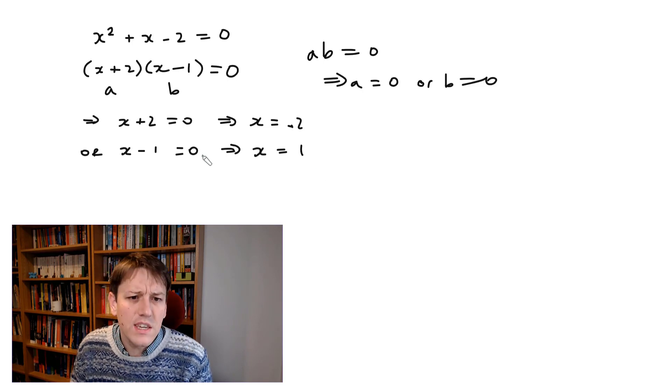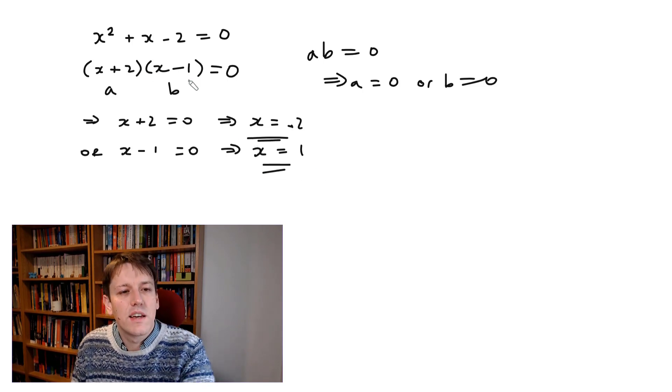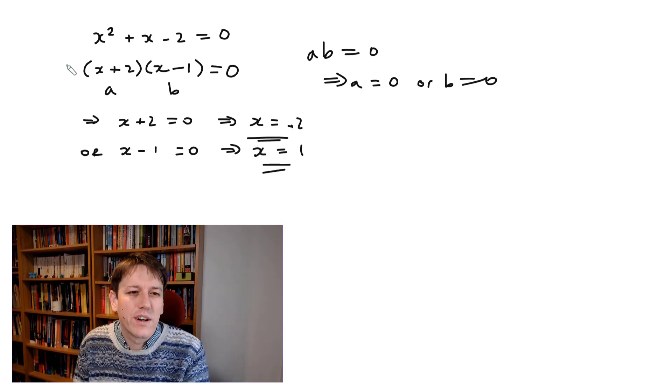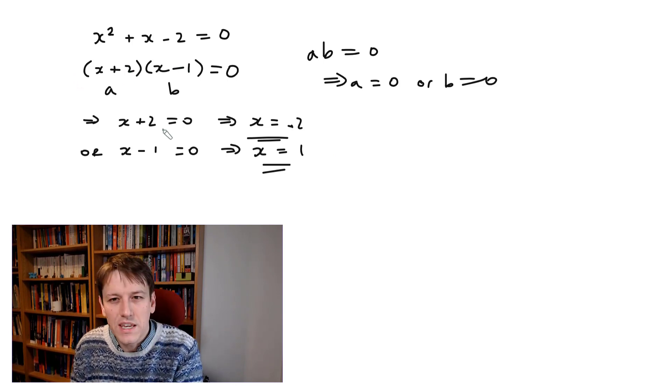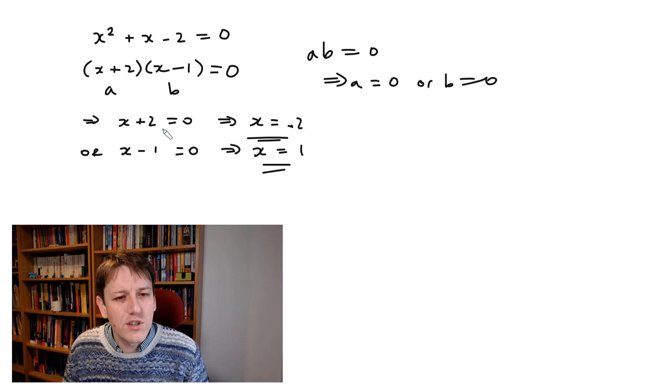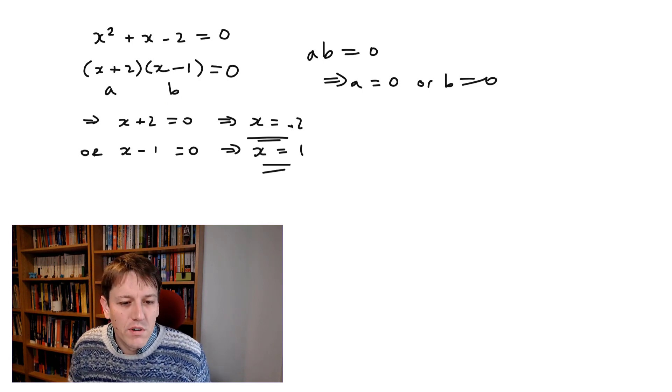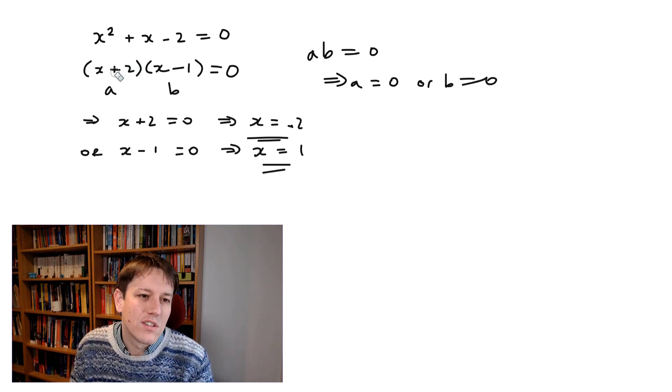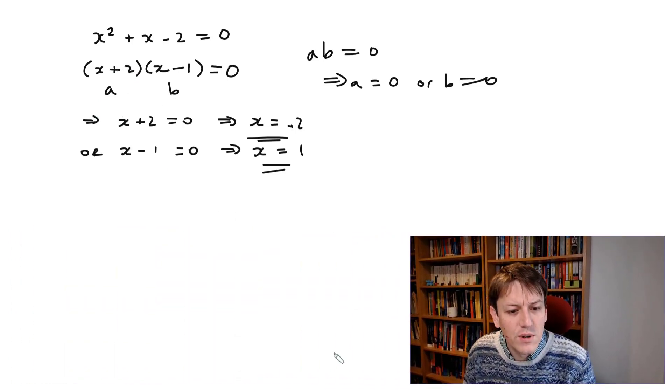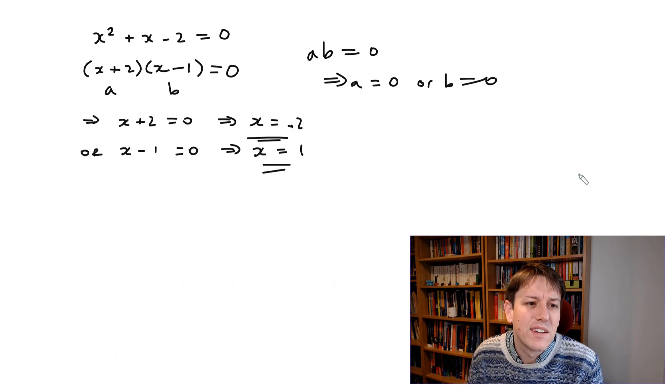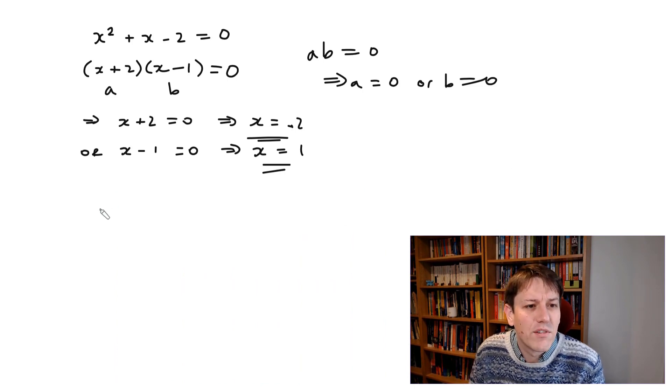You see, a lot of people look at this, and they just learn somehow that once you've got it in this factored form, you just take minus the number here, or plus the number here, and learn a rule that's not based on the logic. Now, why is that a problem? I mean, you could just learn here that you change the plus to a minus, and then that gives you the answer. But it's a problem because as soon as we start to do harder examples, this method doesn't work as well.